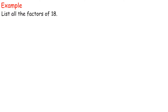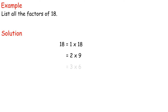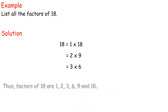Example: List all the factors of 18. Solution: 18 equals 1 times 18, equals 2 times 9, equals 3 times 6. Therefore, factors of 18 are 1, 2, 3, 6, 9 and 18.